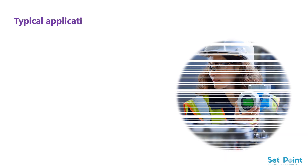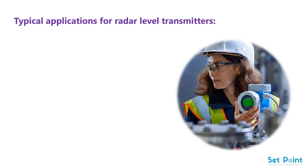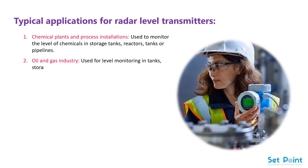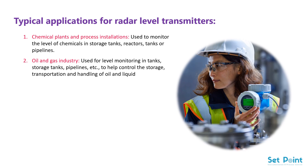Typical applications for radar level transmitters. They are commonly used in a variety of industrial scenarios where accurate measurement of liquid levels is required, including chemical plants and process installations, where they monitor the level of chemicals in storage tanks, reactors, tanks, or pipelines. In the oil and gas industry, they are used for level monitoring in tanks, storage tanks, and pipelines, to help control the storage, transportation, and handling of oil and liquid gases.